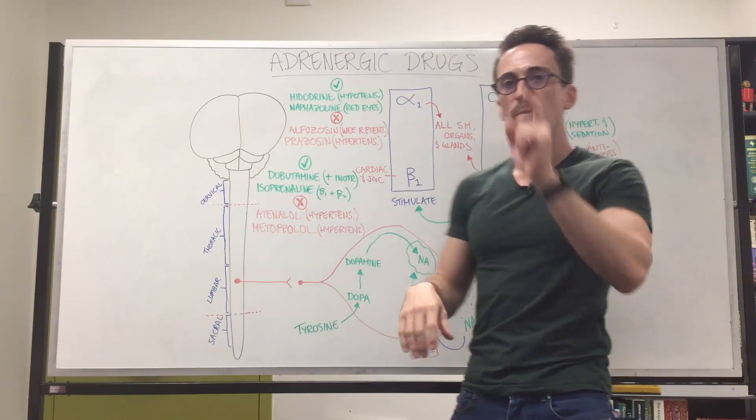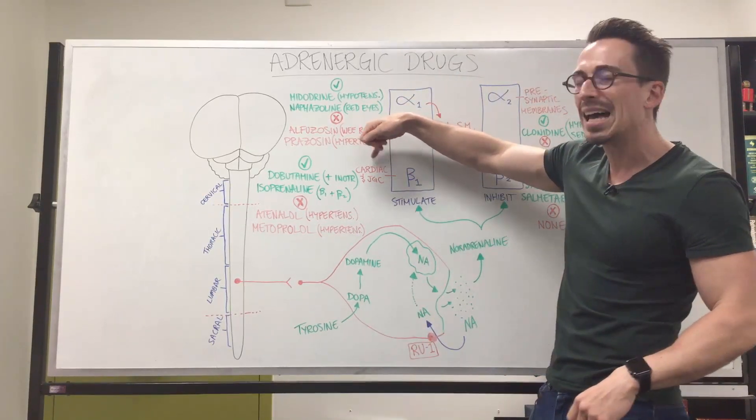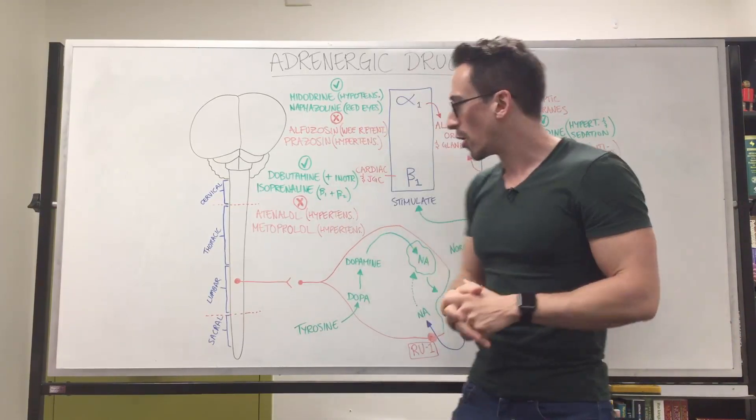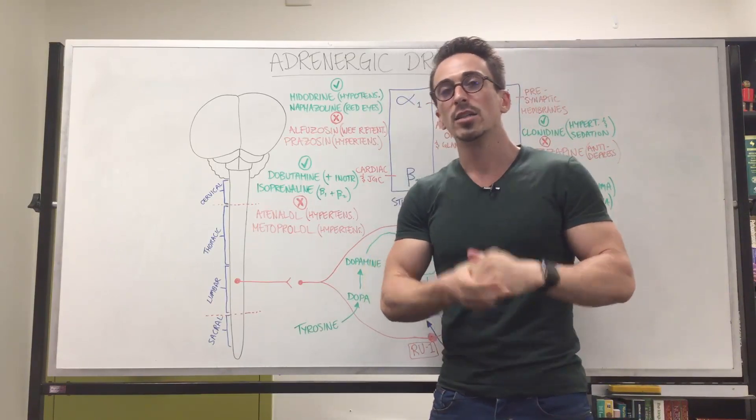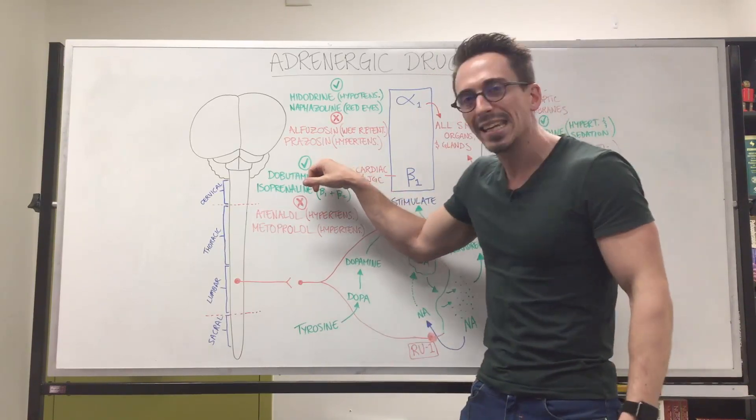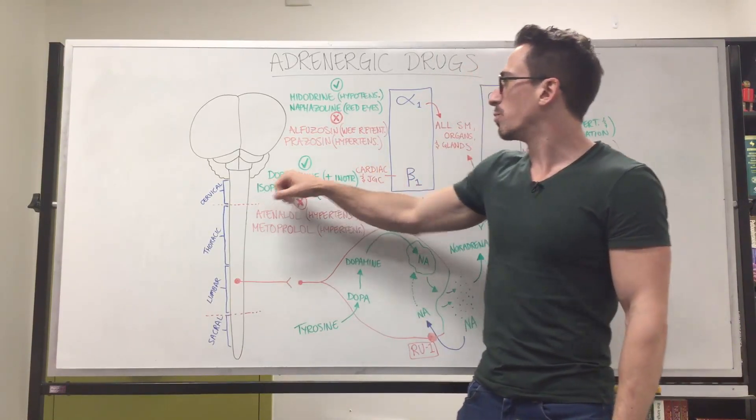If you look at beta-1, when stimulated, it stimulates the cardiac cells, so the heart muscle cells to contract. So it has a positive, what we call inotropic effect. Positive inotropic. Inotropic means the contractile force of the heart. So we've got agonists of beta-1. These agonists include dobutamine.